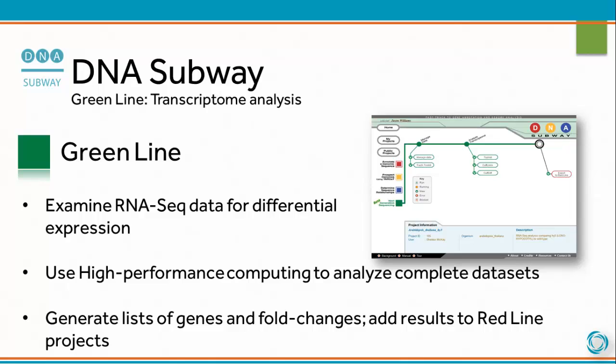The green line is for transcriptome analysis. Examine RNA-seq data for differential expression, use high-performance computing to analyze complete datasets, and generate lists of genes and fold changes. You can also add your results to red line projects.